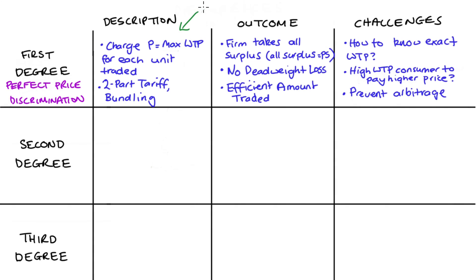Despite this, we can think about some practices we see day-to-day that at least approach our model. In auctions, the goal is to price the good at the absolute maximum willingness to pay. Another practice is haggling — in physical marketplaces and even online, prices are often not advertised and the seller tries to haggle the price up as much as possible, hoping to gauge the highest willingness to pay of the interested consumer. These practices don't look exactly like our model, but we can understand them better through it. So that's first degree.